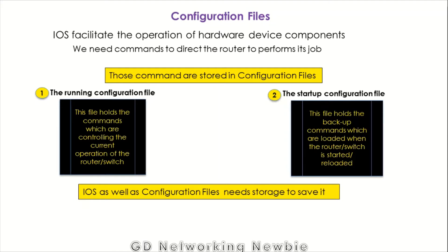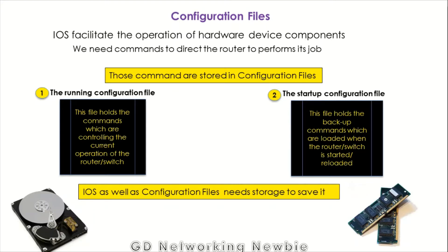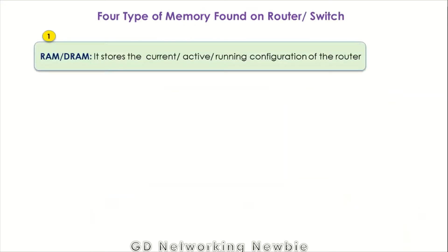IOS as well as those configuration files holding our commands need some storage so that we can save them. There are four types of memory elements found on a typical Cisco router or switch. The first type is RAM — random access memory, or dynamic RAM — and it stores the running configuration file. So the running configuration of the router is saved in RAM.